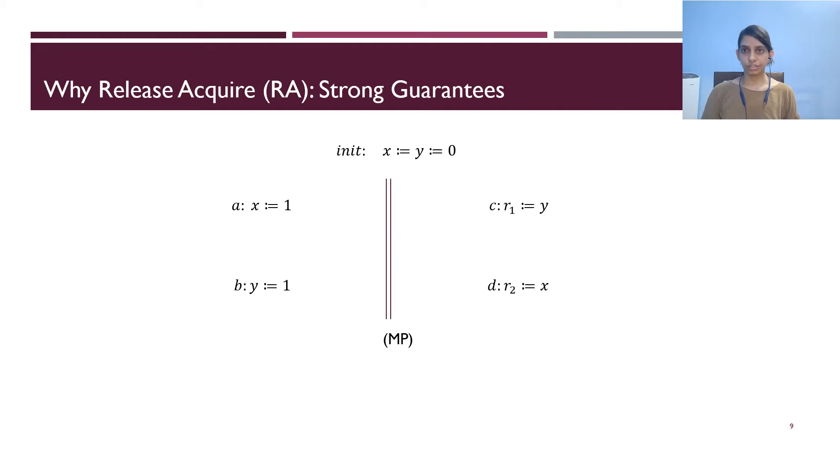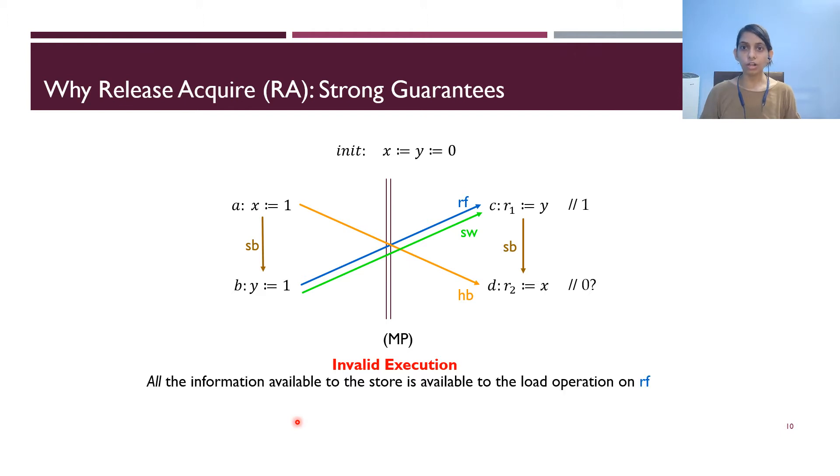Having understood the RA axioms, let's see why the RA memory model is of interest. This is MP or message passing example. The first thread is writing first variable x and then y. The second thread is first reading variable y and then x. For all examples in this presentation, we assume that global variables are initialized with zero. The question is if instruction C reads from instruction B, can instruction D read variable x as zero? Since reads from between B and C causes an SW, the instruction A must happen before instruction D. Hence, D cannot read the value zero. In a sense, the RA memory model forces that all the information available to a store should be available to the load after synchronization. Note that some of the other memory models such as PSO and RMO that allow reordering between loads of different variables or stores of different variables from the same thread will allow this behavior.